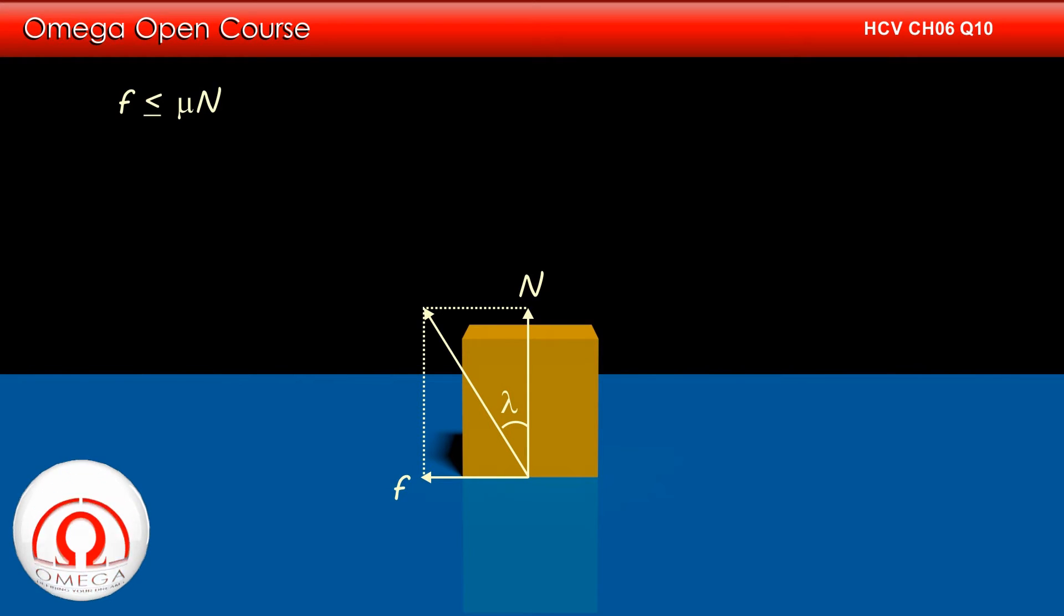We know that static friction is always less than or equal to mu times normal. Now from trigonometry we know that tan lambda is equal to f by N.